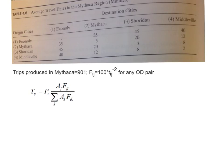Welcome again. What we are trying to do here is estimate the trip distribution between these four cities. We are given the four zones — zone 1, 2, 3, and 4 — which are respectively the city of Econoli, Mythaka, Shoredan, and Middleville. I'm going to take those travel times and use them to distribute the 900 trips that are produced in Mythaka and distribute them to all four zones.